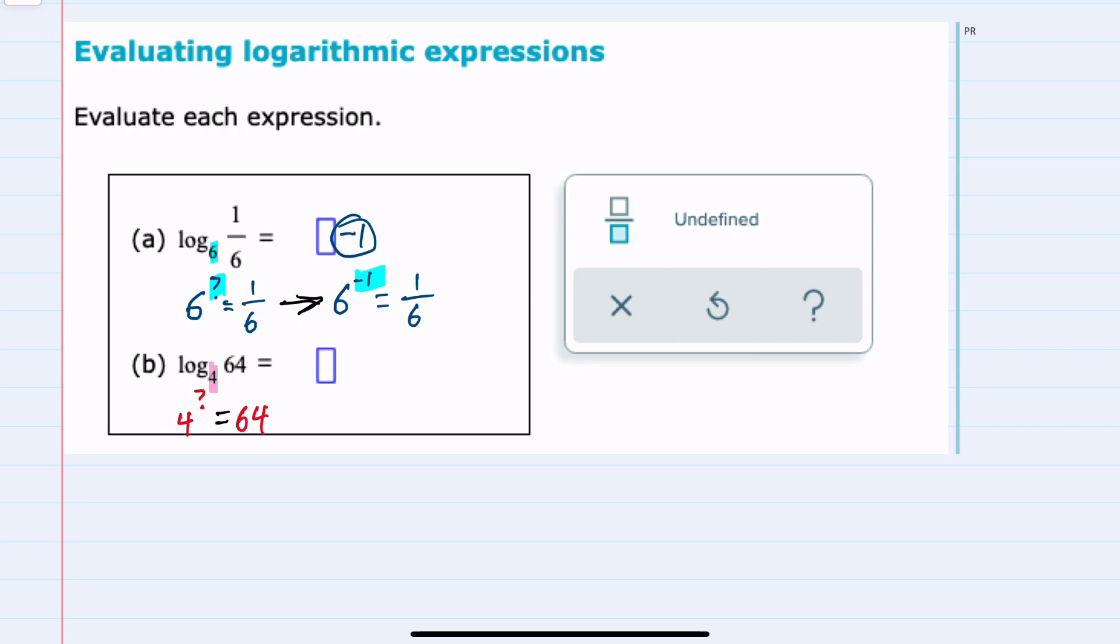The logarithm is looking for the exponent. What power would I raise 4 to to get 64? 4 squared would be 16, and then multiplying by another 4 would be 64. So 4 to the third equals 64. Our logarithm is equal to the exponent, which here is 3.